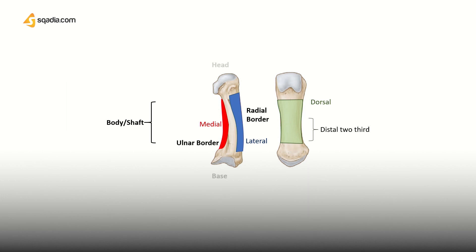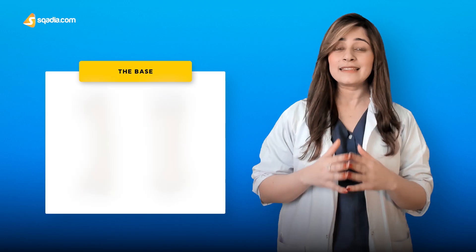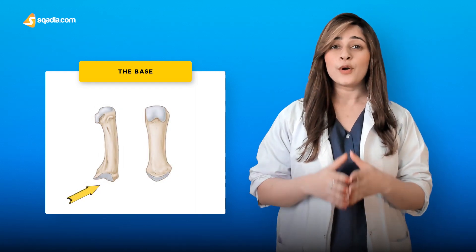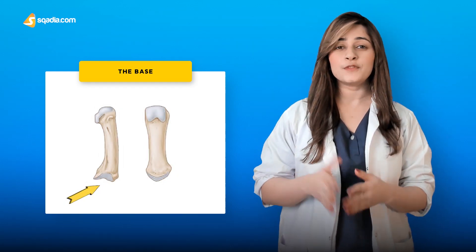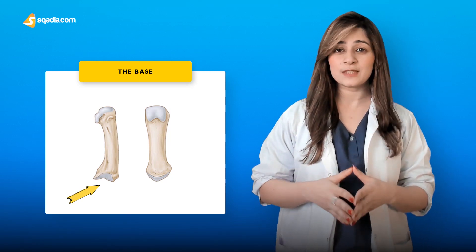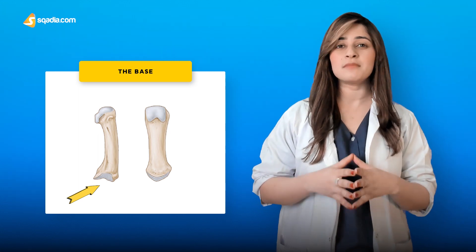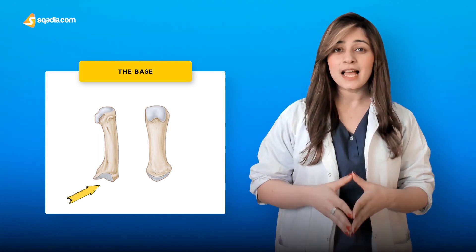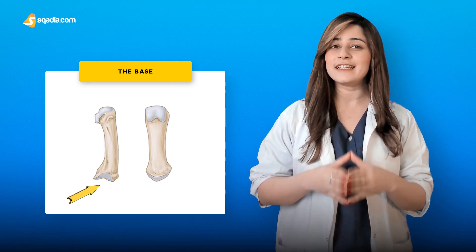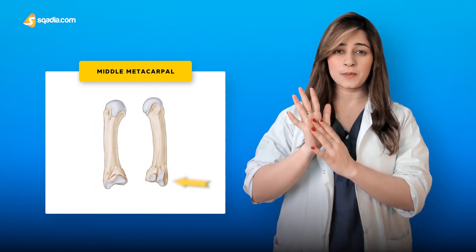The ulnar border is named as it is towards the direction of the ulnar bone, and the radial border is in reference to the radial bone. The base or carpal extremity is of cuboidal form. It is broader from the back and articulates with the carpal and adjoining metacarpal bones. Its dorsal and volar surfaces are rough, providing attachment for ligaments.